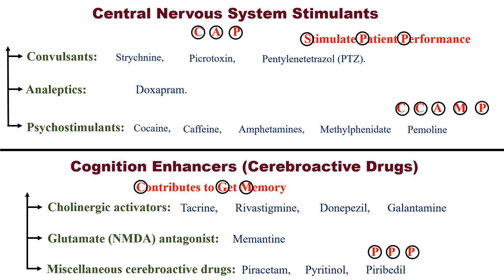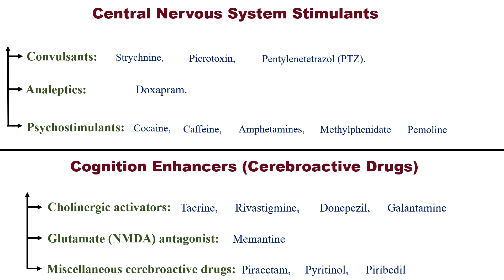Under miscellaneous drugs, remember P-P-P: piracetam, pyritinol, and related drugs. With this mnemonic you can remember these classifications. These classifications are very simple, but still, to avoid any sort of confusion, remember at least a few mnemonics.